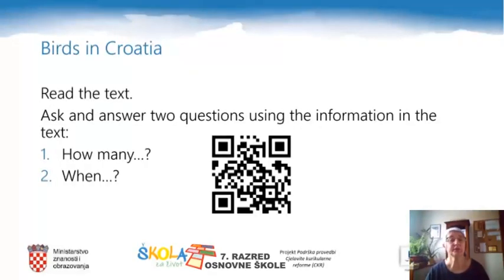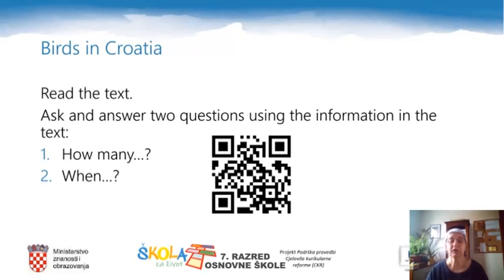We are going to read another text about birds in Croatia. You can scan the QR code on the screen to get the text. When you read the text, think about how you can ask a question beginning with 'how many' and a question beginning with 'when.' Write these two questions and write the answers after you read the text.